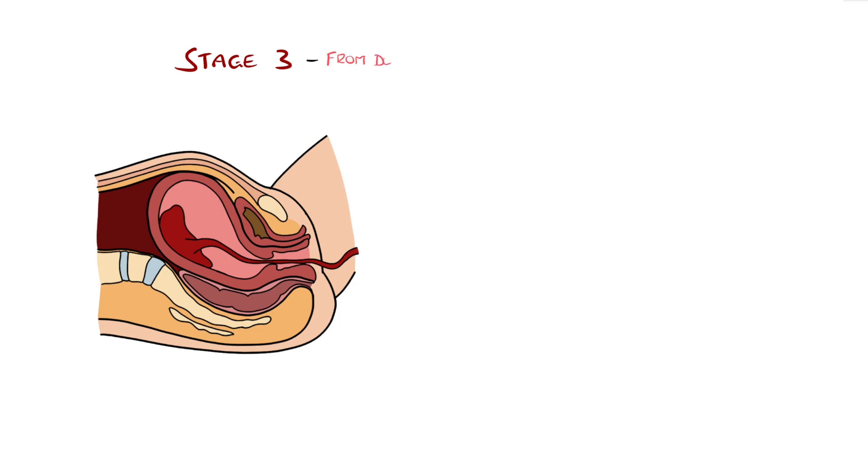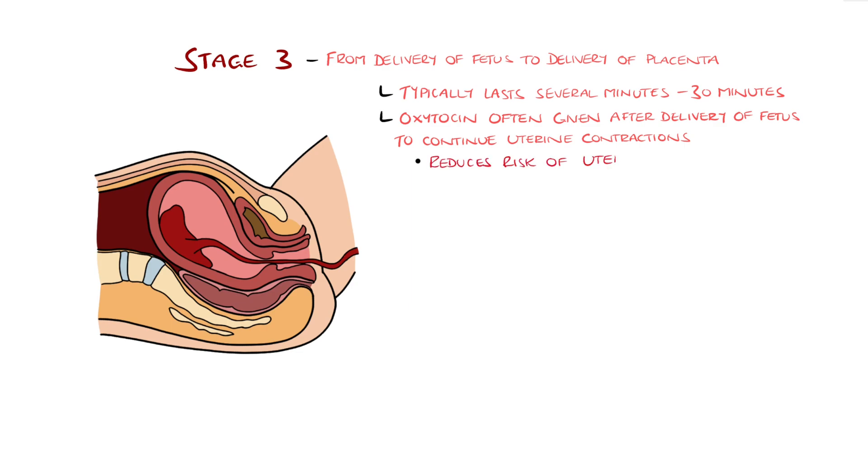The third stage begins after delivery of the fetus and ends with the delivery of the placenta. It typically involves the uterus contracting to expel the placenta and is a short duration of typically a few minutes, but can last as long as 30 minutes. In some cases, oxytocin can be given immediately after the fetus is delivered, which helps continue uterine contractions and reduce the risk of the main complication in this phase, which is postpartum hemorrhage, usually as a result of uterine atony.